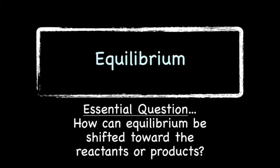Hello, this is Ms. Moore, and today during chemistry we're going to discuss equilibrium. Today's essential question: how can equilibrium be shifted toward the reactants or toward the products? Remember to completely answer the essential question in your summary.